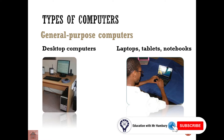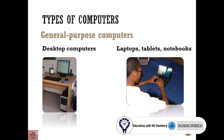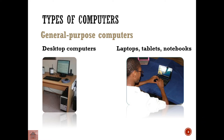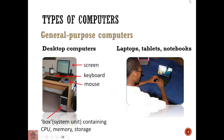When we talk about different types of computers, we're talking about general purpose devices and dedicated devices. A general purpose device can do more than one thing. On the left we've got our desktop computer — a screen, keyboard, mouse, and a system unit. We no longer call it a box; it's a system unit because it contains the CPU, memory, storage, and motherboard.